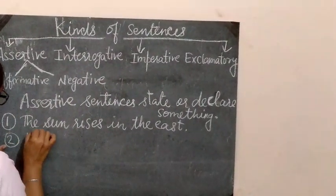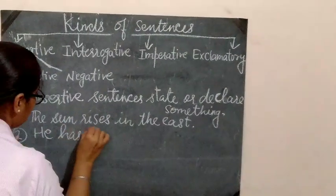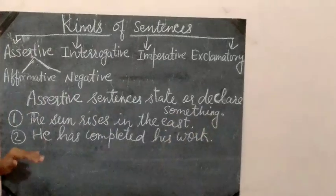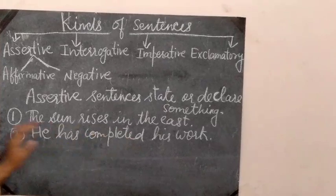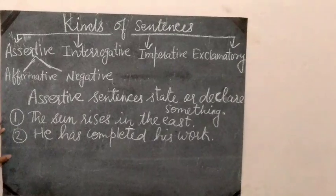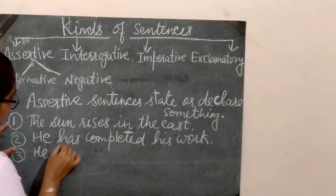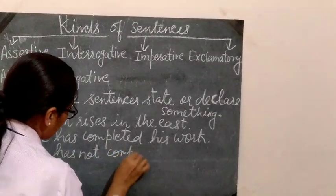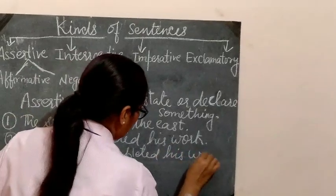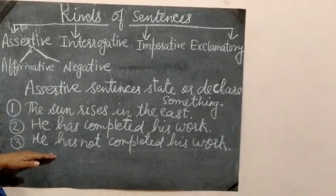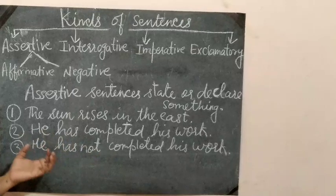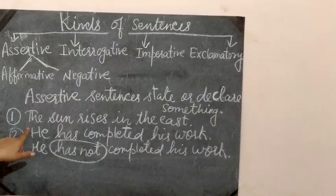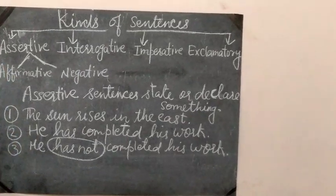Second example: 'He has completed his work.' Again, this sentence is giving a statement, so it is also an assertive sentence. Third, taking the same sentence in negative: 'He has not completed his work.' This gives a negative statement. So the affirmative and negative are both parts of the assertive sentence.